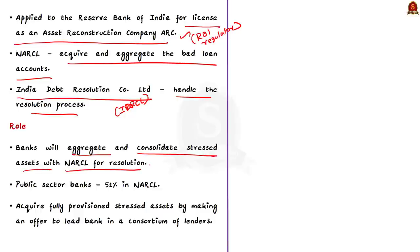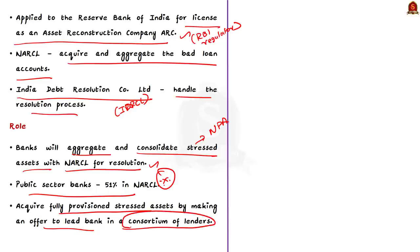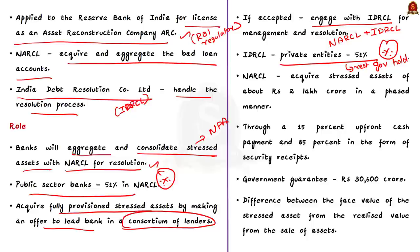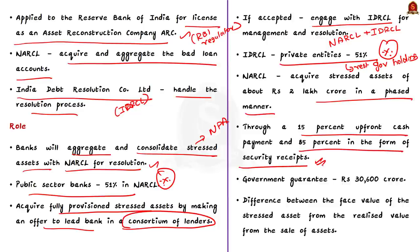Under the new framework, banks will aggregate and consolidate stressed assets with NARCL for resolution. Public sector banks will hold 51% ownership in NARCL. NARCL will acquire fully provisioned stressed assets by making an offer to the lead bank in a consortium of lenders, and once the offer is accepted, NARCL will engage with IDRCL for management and resolution. In IDRCL, private entities will maintain 51% ownership with the government holding the rest. NARCL will acquire stressed assets of about ₹2 lakh crore in a phased manner.